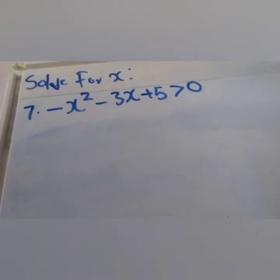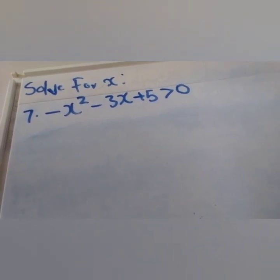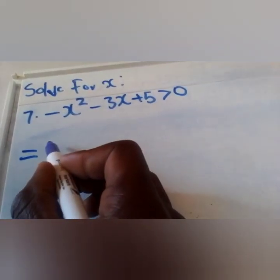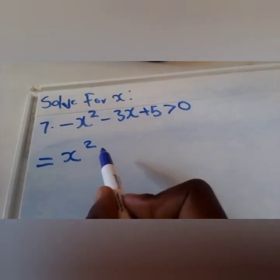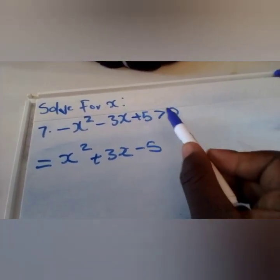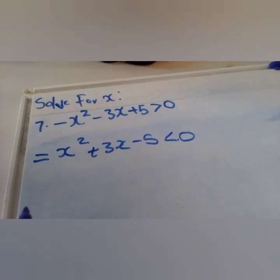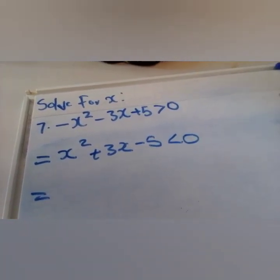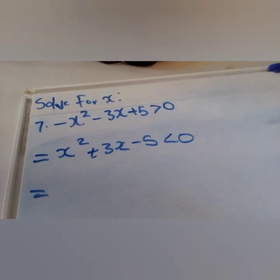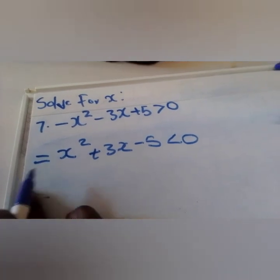This example is different because the first term has a negative sign. When we divide by a negative number, everything changes and the inequality sign reverses direction. We divide through by negative one: the expression becomes x squared + 3x − 5 less than zero. Now everything is in standard form. We need two numbers that when multiplied give negative five and when added give positive three — these cannot be found easily.